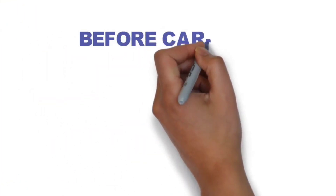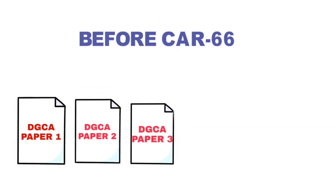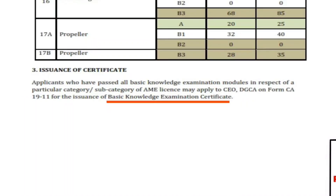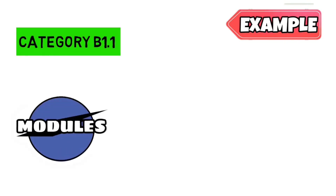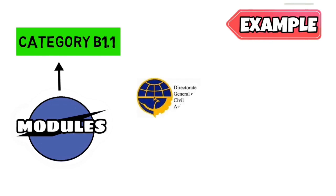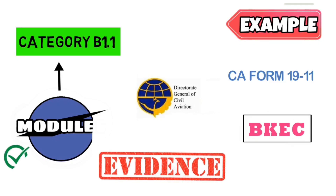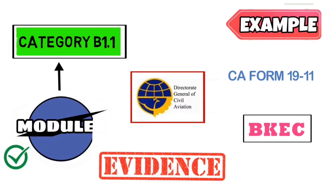In the earlier DGCA examination pattern, clearing Paper 1, 2, and 3 resulted in a Basic Aircraft Maintenance Engineering certificate. Under CR66, we now receive a Basic Knowledge Examination Certificate (BKEC), issued by the CEO. To apply for this, you need to submit CA Form 19-11. For example, a person who has opted for B1.1 and cleared all module requirements applies to CEO DGCA for the issue of BKEC on Form 19-11. This certificate proves that he has cleared all module requirements for B1.1. Currently, DGCA has not yet issued a BKEC to anyone — it is still in process.